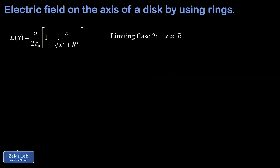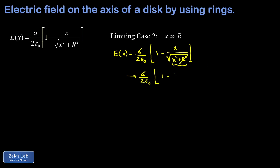Next, we investigate the large x limit — when x is much greater than R — where the field should reduce to that of a point charge. The naive approach: inside the square root, if x is much bigger than R, then R becomes negligible, and the fraction reduces to x/x = 1, giving 1 minus 1 = 0. Sure, E goes to zero as x becomes large, but this isn't useful — it doesn't tell us how the field goes to zero.